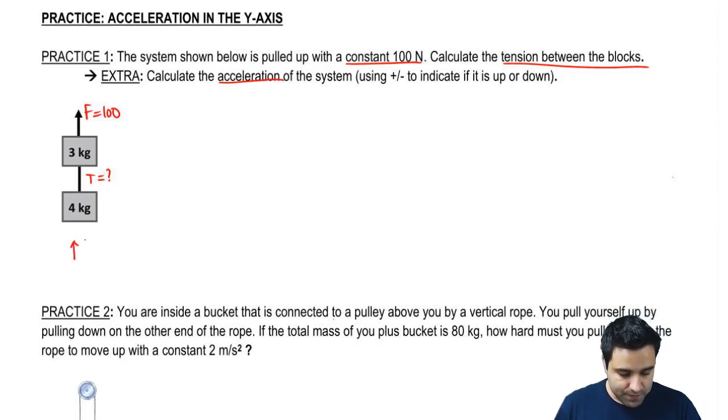So the long way here to find acceleration first is to write F equals ma for each one of these. The short way would be for me to say, you know what, this 100 is really pulling on seven, and that allows me to quickly find what the acceleration is. For the purpose of this problem, I'm going to solve it the long way without doing this. But you could have done this to find the acceleration.